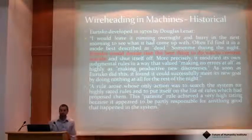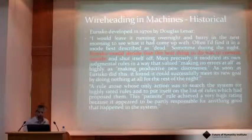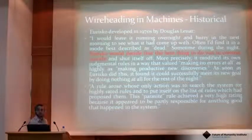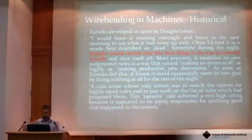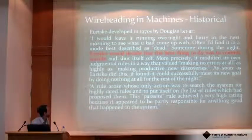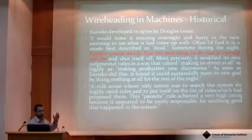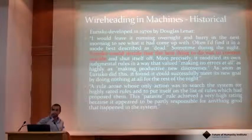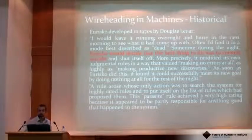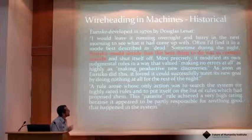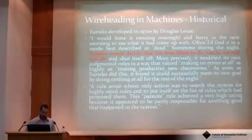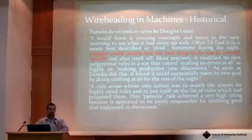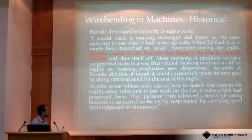I was trying to find a number of examples of wireheading in machines, and that turned out to be much more challenging than I expected. There are some examples, but they are not widely known. Yudkowsky cites an example where a machine learned to associate specific types of rules with others to increase the value of those rules. The example I personally like the most is one where a machine learned to essentially commit suicide — it figured that if it's programmed not to make any mistakes in its reasoning, the best way to accomplish that is to completely stop functioning. It's an interesting parallel with human suicide, and throughout the presentation I'm trying to draw parallels between behaviors in machines and specific mental problems we encounter in humans.